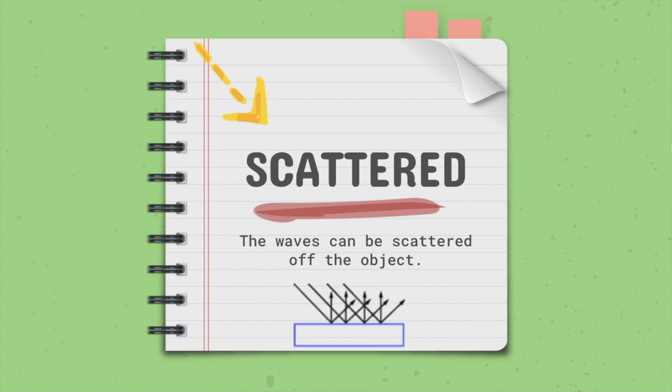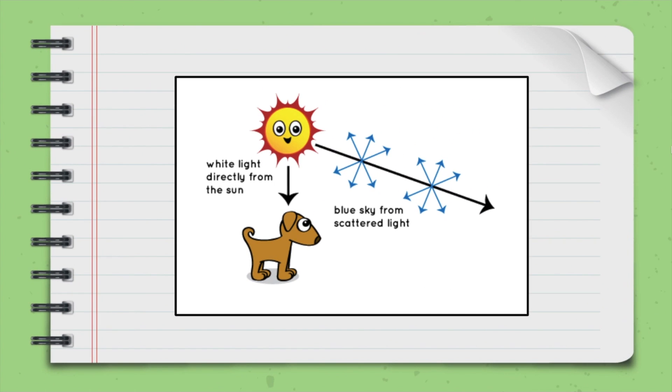The waves can be scattered off the object as well. So white light directly from the sun hitting an object. We see that object. But the sunlight also hits the earth's atmosphere. When it hits the earth's atmosphere, those light waves are scattered. And usually those waves are shorter and choppier waves of blue light. And that's why our sky looks blue.